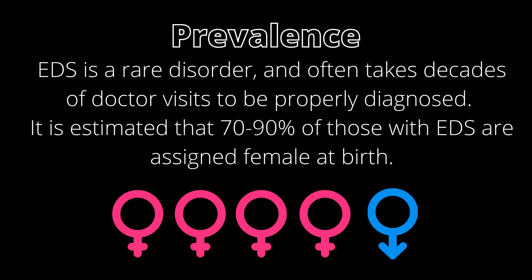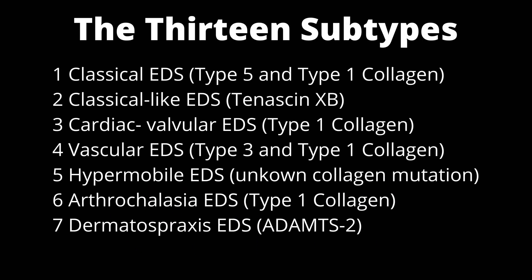There are 13 subtypes of EDS which have different mutations. Classical EDS affects type 5 and type 1 collagen. Classical-like EDS involves a Tenascin-XB mutation. Cardiac-valvular EDS involves type 1 collagen.